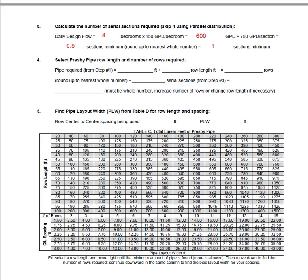In step number four we're going to determine our pipe row length and how many rows we will need. We're going to pull the value from step one — 280 feet of pipe — and divide by the row length we have selected. The rows should be as long as the site will accommodate, with a maximum row length of 100 feet. For this example we have selected a row length of 70 feet. Dividing our total required pipe by 70 feet, we find that we need four rows. We then divide this by the number of required serial sections from step three, which was one. We need one serial section of four 70-foot rows.